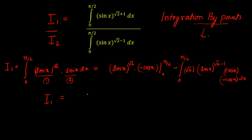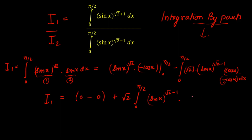Now putting the limits in the first part: at x = π/2, cos(π/2) = 0, so we get 0; at x = 0, sin(0) = 0, so that term is also 0. The boundary term vanishes. We have a negative from the IBP formula and a negative from −cos(x), so negative times negative is positive. Bringing constants outside, we get √2 times the integral from 0 to π/2 of sin(x)^(√2−1) · cos(x) · cos(x) dx.